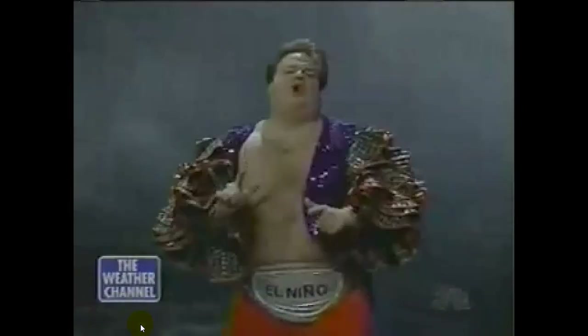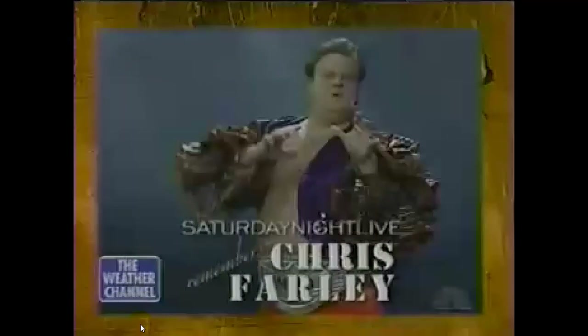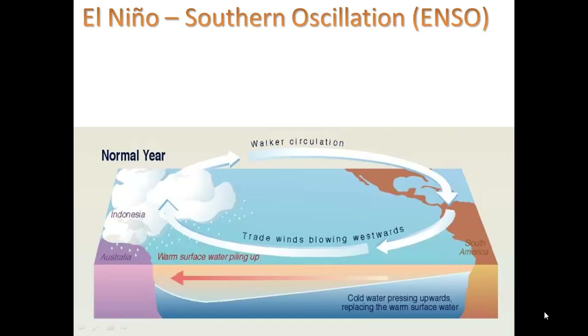El Niño. The official name for El Niño is ENSO — El Niño Southern Oscillation. That oscillation refers to the fact that about every three to seven years, there is a shift in the way that the major trade winds blow.